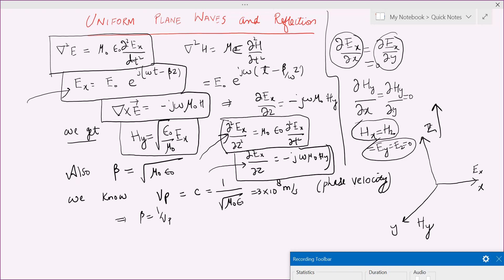And also you will get this beta. After you put this second derivative, you will get beta is root of mu naught epsilon naught. And some of you may be knowing that the velocity of light in free space is one over root of mu naught epsilon naught, which is also called V_p, phase velocity. We can clearly see that beta is inversely proportional to the phase velocity.